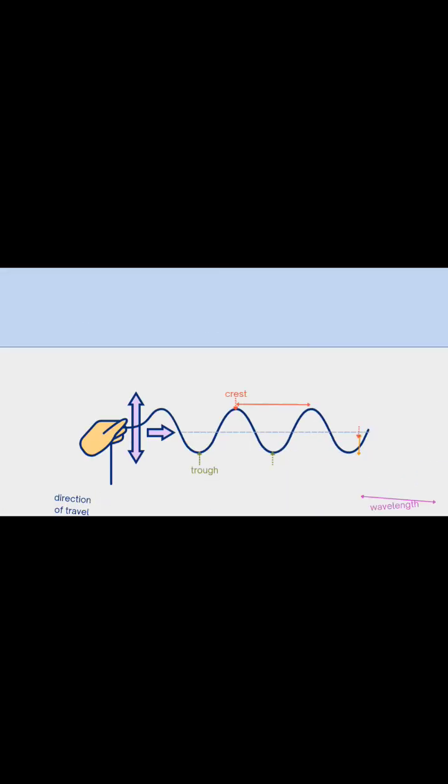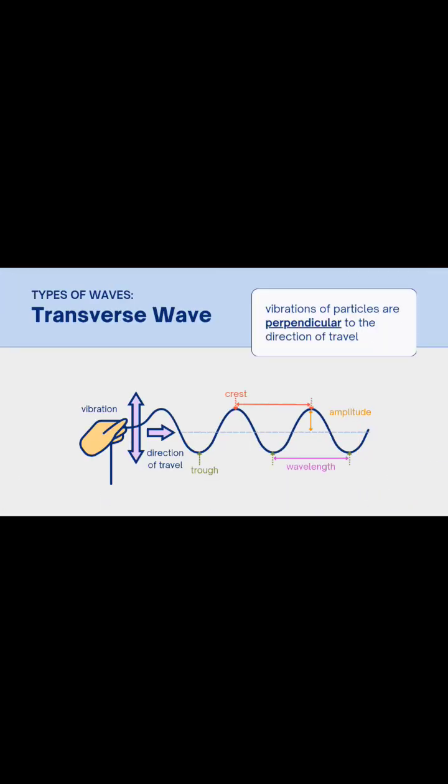Let's look at the two main types of waves, transverse and longitudinal. In a transverse wave, the vibrations of the particles are perpendicular to the direction the wave is moving.